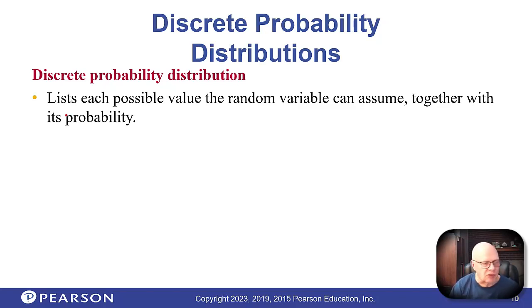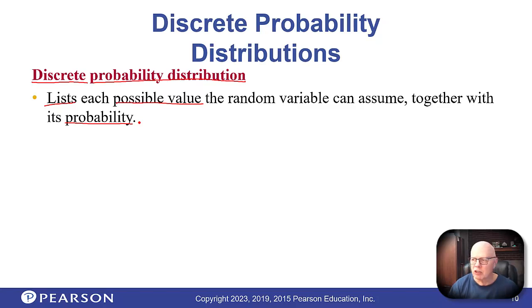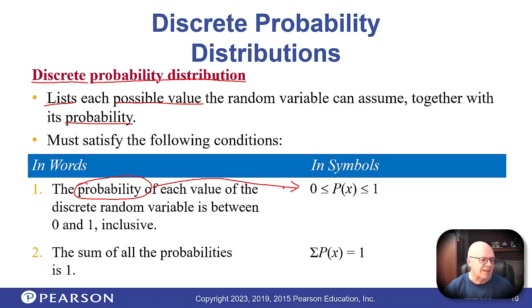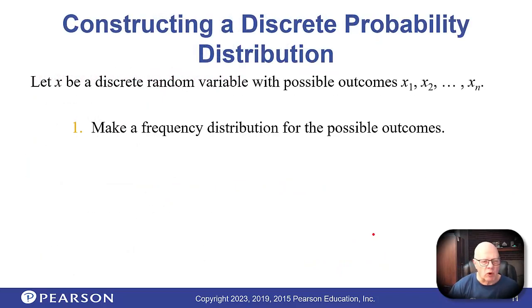Now, each probability distribution lists possible values along with their respective probabilities. A couple of things to keep in mind: number one, each probability is somewhere between zero and one, inclusive. And second, when you add up all the probabilities, the sum has to be one — that means 100%.